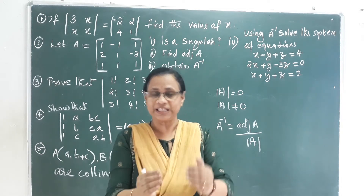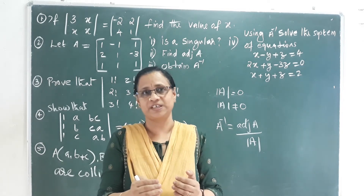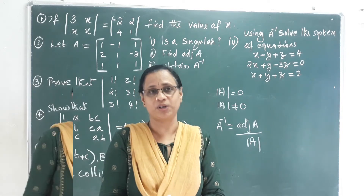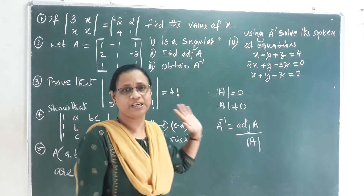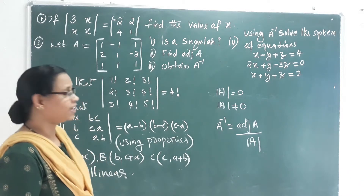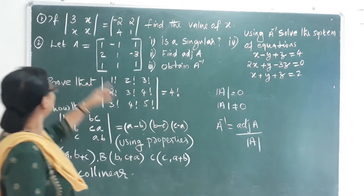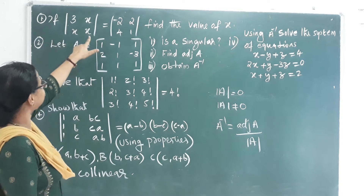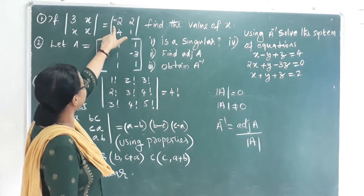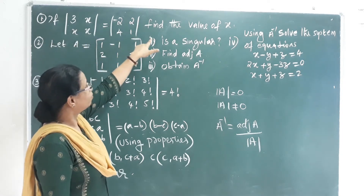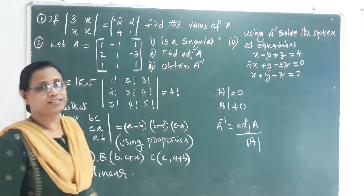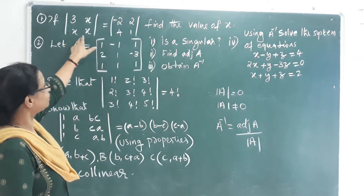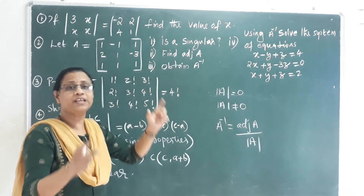We are discussing essay type and short answer type questions for the exam. Let's go to the first question: If determinant of the matrix with entries 3, X, X, X equals the determinant of the matrix with entries negative 2, 2, 4, 1, find the value of x.